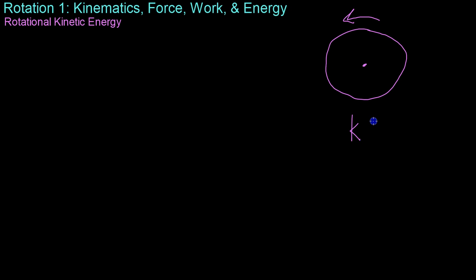Now if we wanted to find the kinetic energy of the disk, we already know an equation for kinetic energy. It's mv squared over 2. But we cannot use this equation to measure the kinetic energy of this object because each individual particle of mass has a different velocity associated with it. So we have to change our reference frame to one of rotational kinematics, which is what we learned to do in the last video.